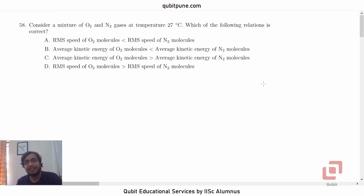Namaste. Welcome again to our channel, Qubit Educational Services. We are solving the IIT JAM aptitude test 2021 physics MCQs. And in this video, we are going to solve the third last question, that is question number 58 from the paper.